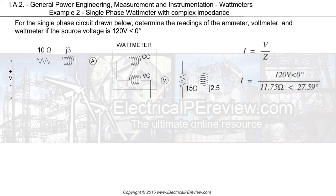120 volts divided by 11.75 ohms at 27.59 degrees. We arrive at 10.21 amps at a phase angle of negative 27.59 degrees for our first answer.